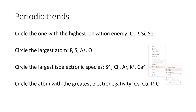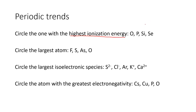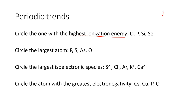For periodic trends, what we want to do is make a comparison based on the position on the periodic table about the properties of our atoms. We're going to start with highest ionization energy. The general trend is starting at the bottom left and going towards the upper right — we have increasing ionization energy as you go towards the upper right, suggesting that fluorine is going to have a very high ionization energy, whereas an atom like francium is going to have a very low ionization energy.